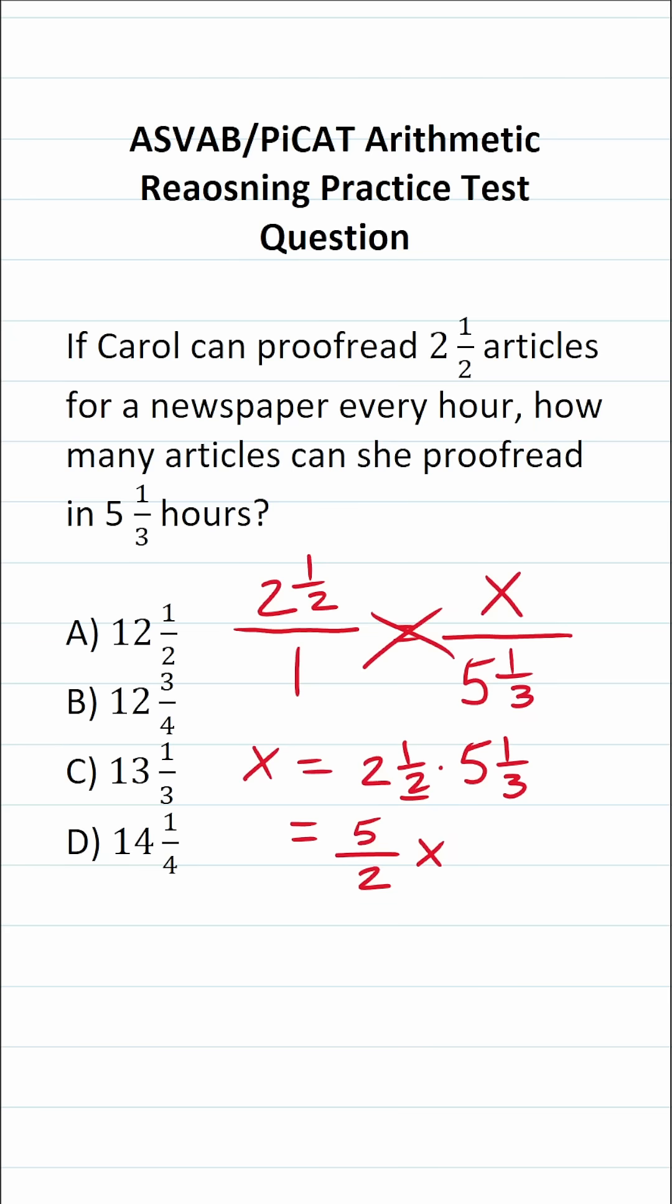And how are we going to convert five and one third to an improper fraction? Our denominator is not going to change, so I'm going to leave that as three. Now, all we have to do is find our numerator. To do that, we're going to do five times three, which is 15, plus one, which is 16.